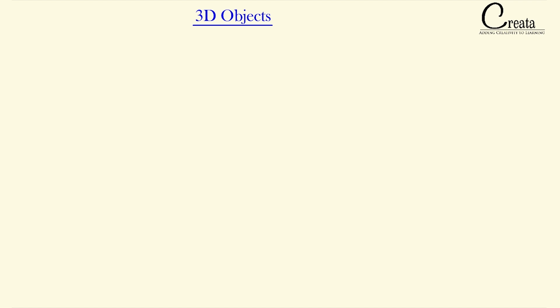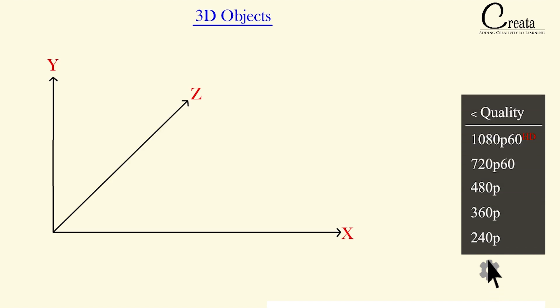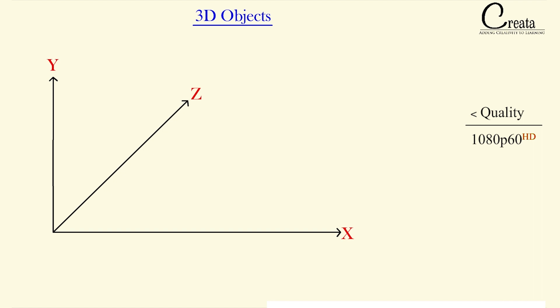First of all, we will understand what a 3D object is. 3D objects are objects which exist in three dimensions — that is, they cover the x, y, and z axes, covering all three dimensions.